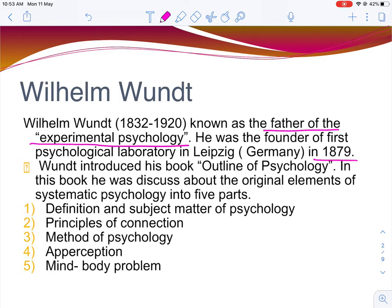The first school of psychology is Structuralism, which was essentially associated with the Outline of Psychology. Wundt made many contributions independently, and Structuralism was the school of thought connected to his Outline of Psychology. The topics covered include: definition and subject matter of psychology, principle of connection, method of psychology, perception, and the mind-body problem.